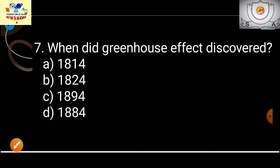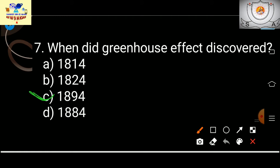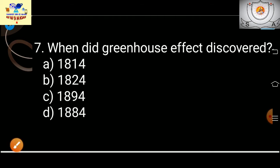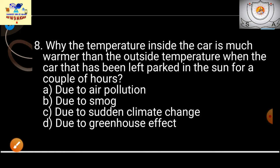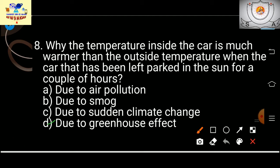Next: when was the greenhouse gas discovered? It was discovered in 1894. Next question: if a car has been left parked in the sun for a couple of hours, why is the temperature inside the car much warmer than outside? The answer is the greenhouse effect.